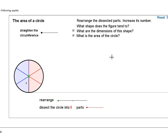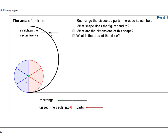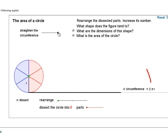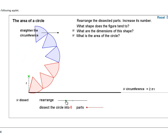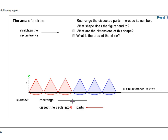Here's a circle cut into six slices. The circumference, which equals 2πr, is the total distance around the outside of the circle. If I start to unfold that circumference and lay it out on a line, I see this distance is my circumference, 2πr. Now if I start to rearrange the pieces of my circle and lay them out on that same line, they should be equal to that circumference.